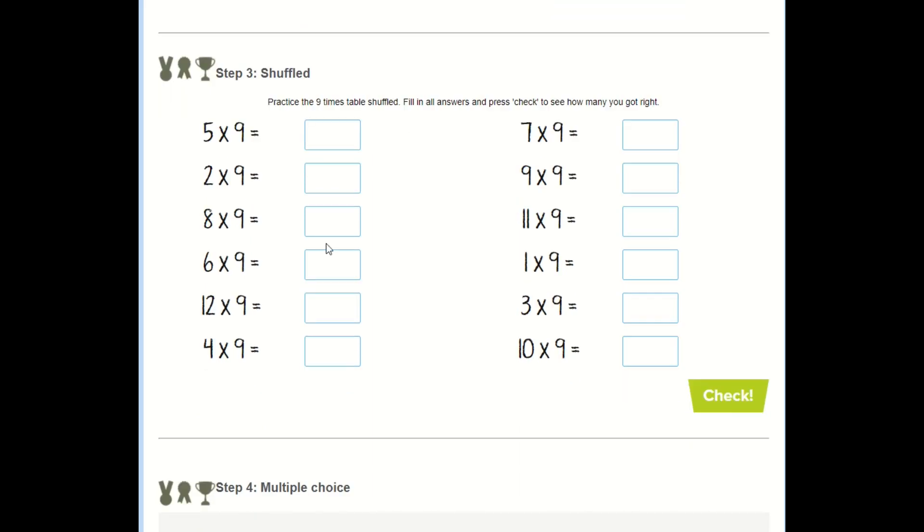On step three I've got my times tables again but this time they've been shuffled. I need to make sure I know them out of order. I'm having to say them out loud in my head to remind myself. I might have to count up in my nines each time and again when I'm finished I click check.